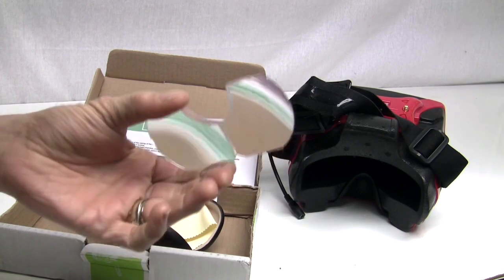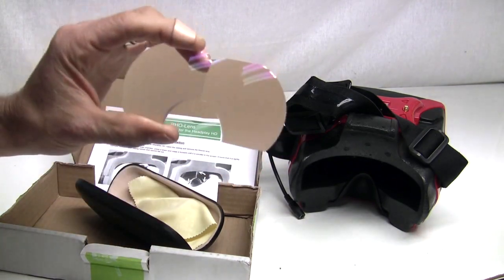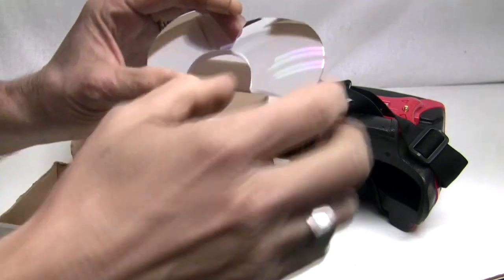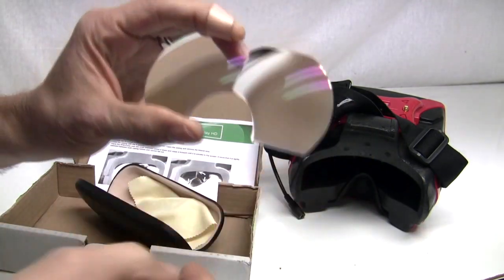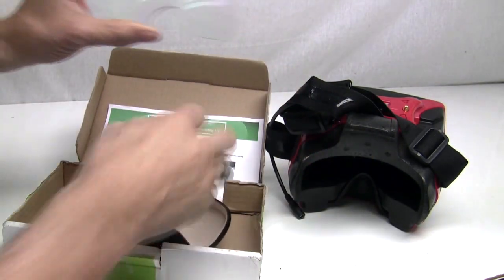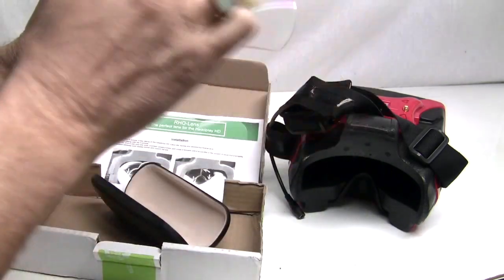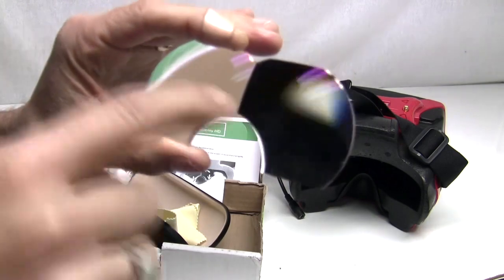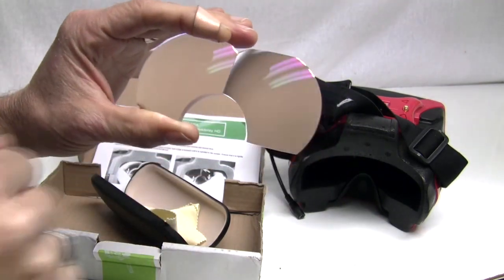One thing to note right off the bat is that this is two separate pieces. I don't think this is glass, I think it's ground plastic. It's a little dusty - they actually provide a little wipe there. These are two pieces and they're glued together.